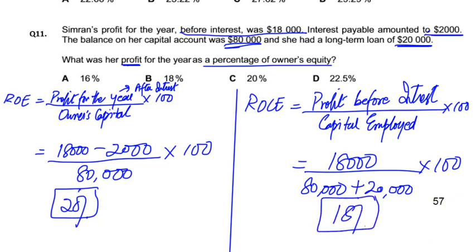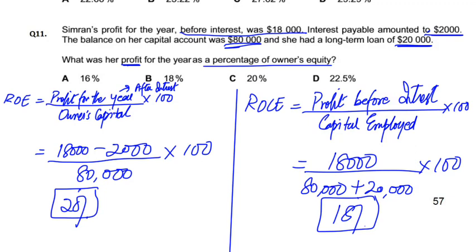Return on capital employed is 18%, meaning on the total investment, 18% is earned. And on the owner's investment specifically, how much is earned? 20%. Obviously, the owner gets more return than the lender because the loan carries interest on a safe investment, while the owner takes more risk — so the owner's return is higher. Overall return is 18% and owner's return is 20%.